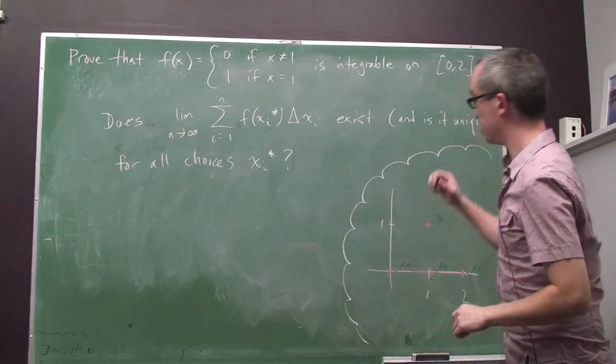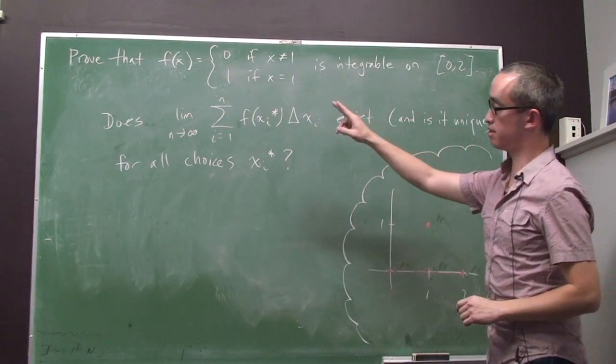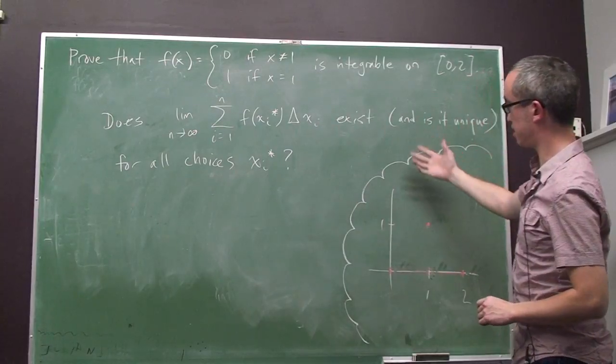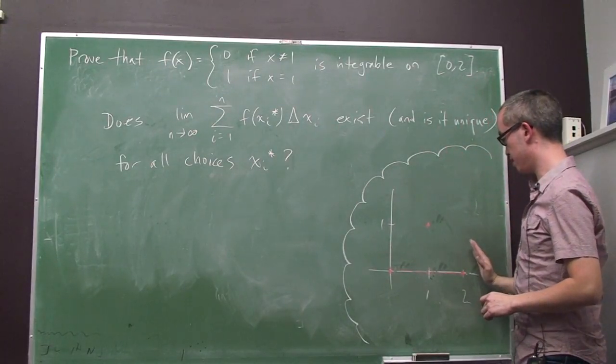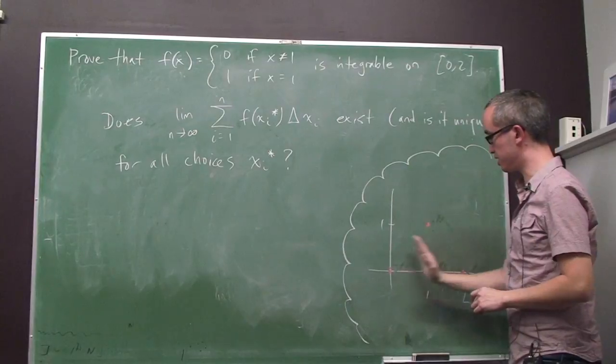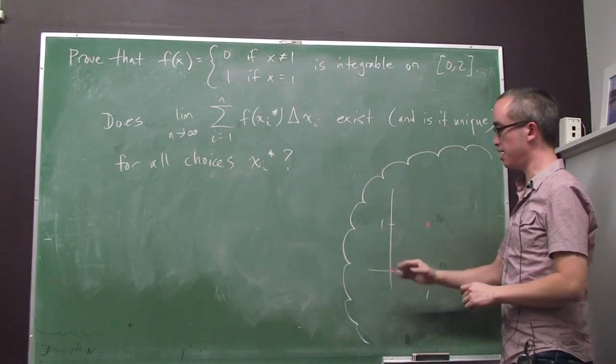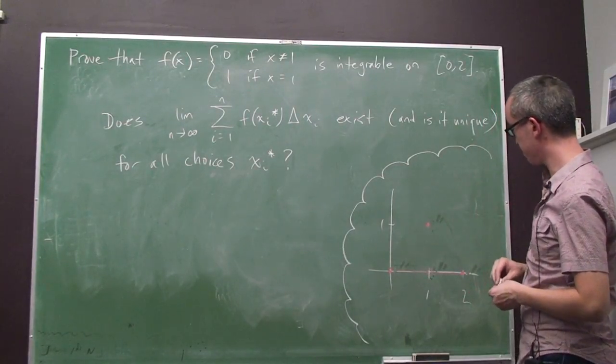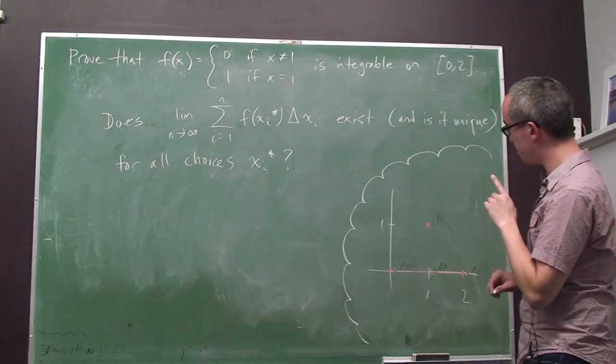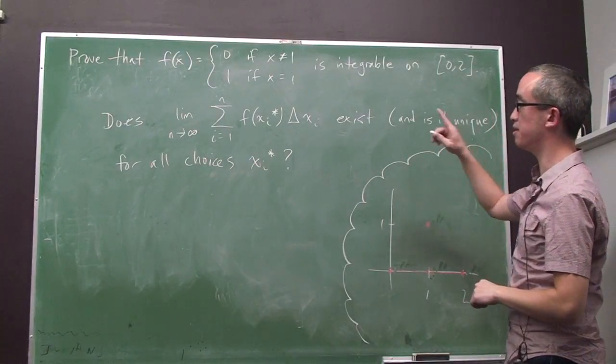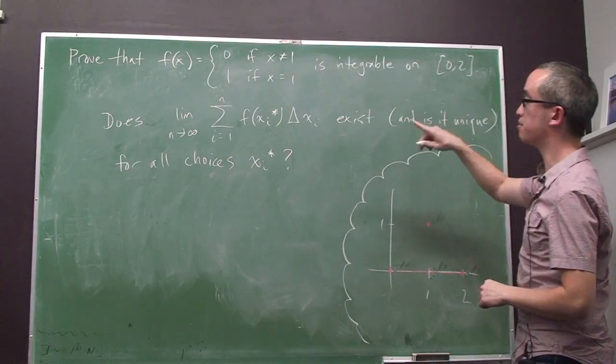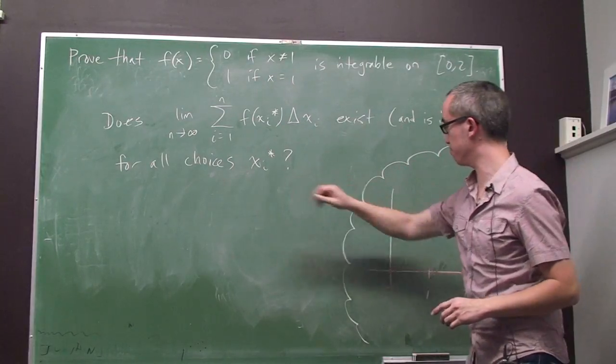And we want to ask, does the limit of the Riemann sums exist, and is it unique, no matter how, or as we divide up this interval into subintervals and let the number of subintervals go to infinity? And I think we can claim that it is. In fact, I think we can claim that this limit is going to be equal to 0, for all choices of our sample points.